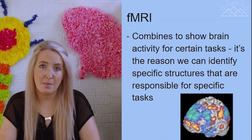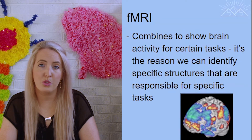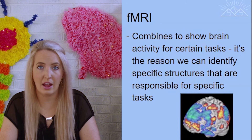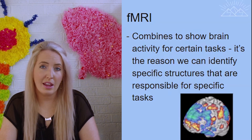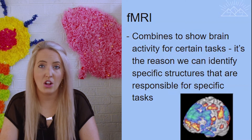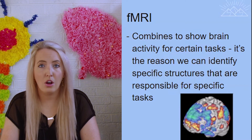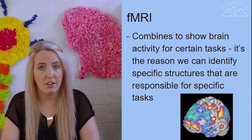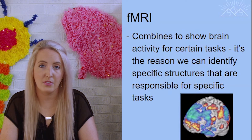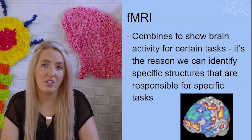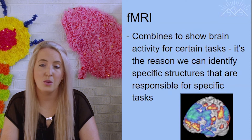The most comprehensive type of exam is going to show us both the structures and the functions of the brain, and that is known as an fMRI or functional MRI. What's nice about an fMRI is it gives us the structural details that an MRI does, but it will also show us brain activity like a PET scan, so we can see the specific areas of the brain that light up under different conditions. It's with this that we can really start to understand where the different parts of the brain exist and what their functions are.